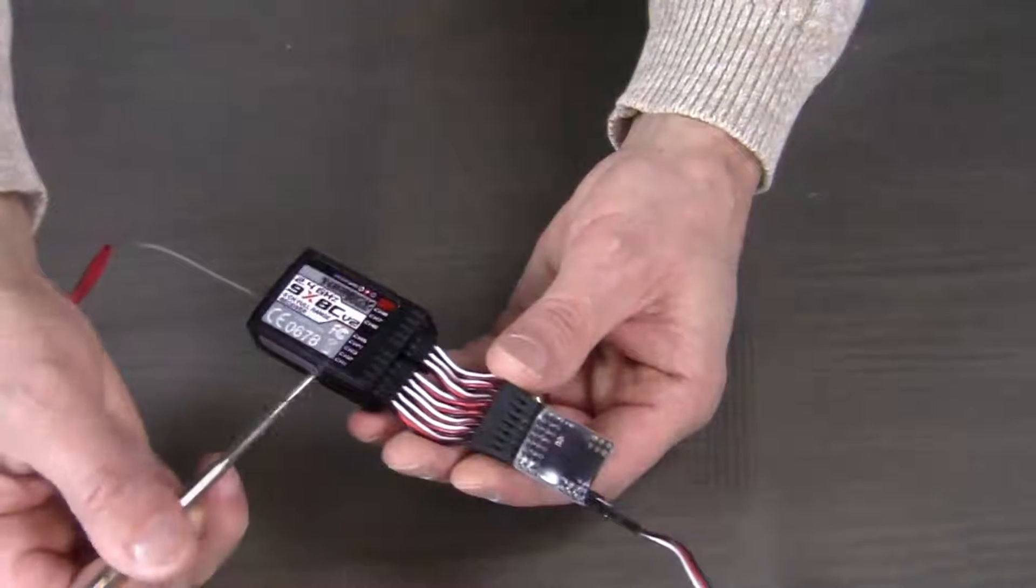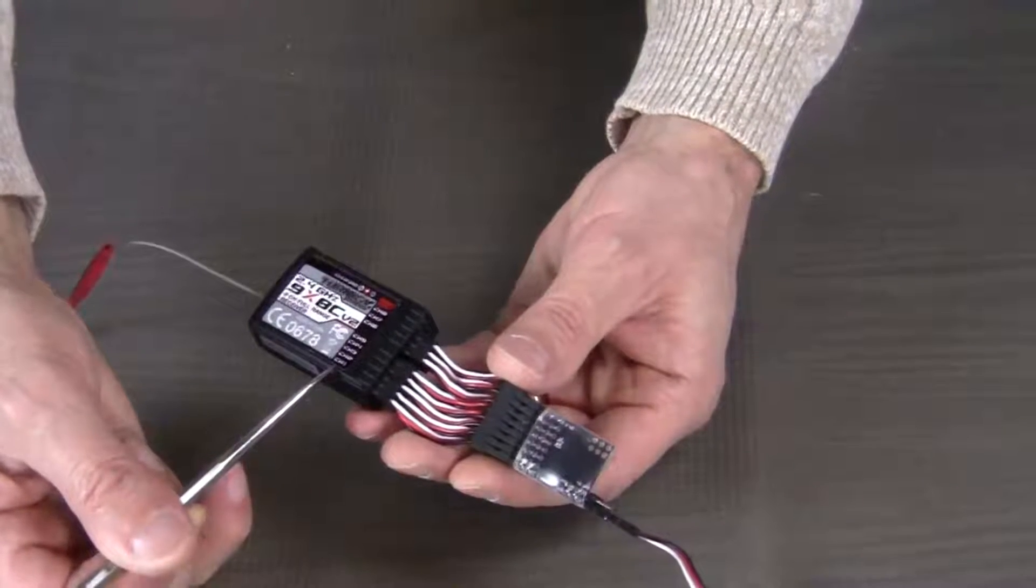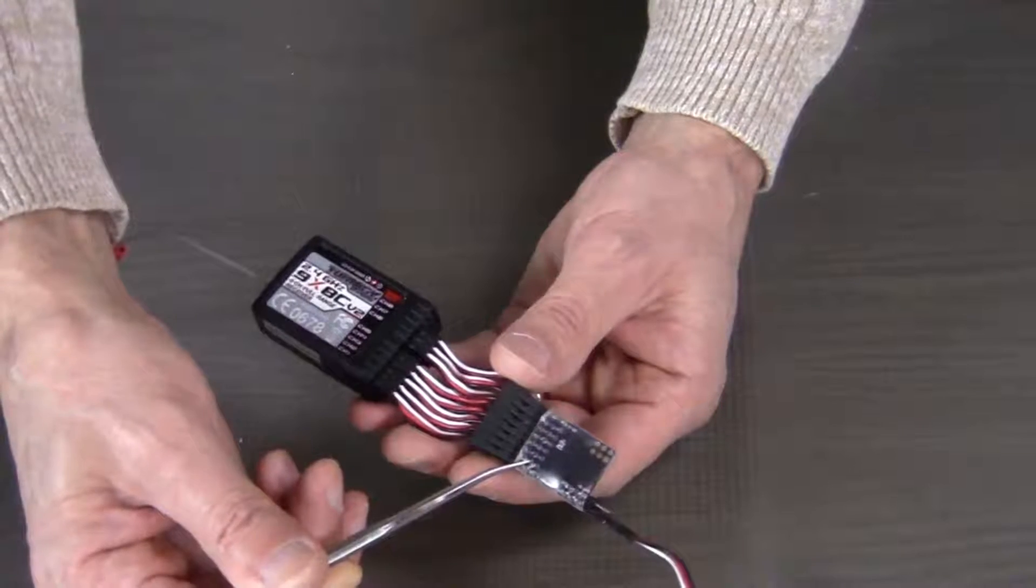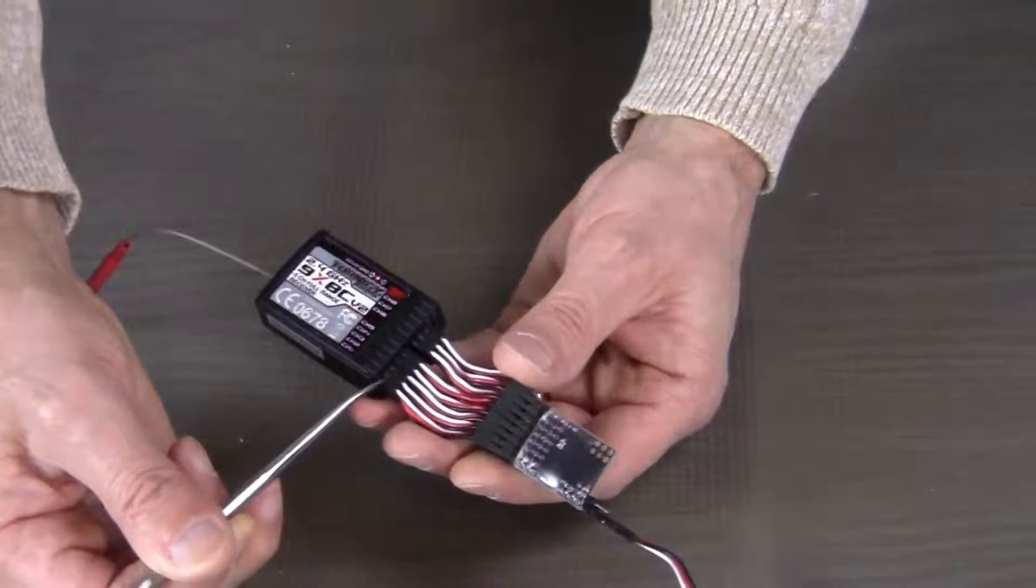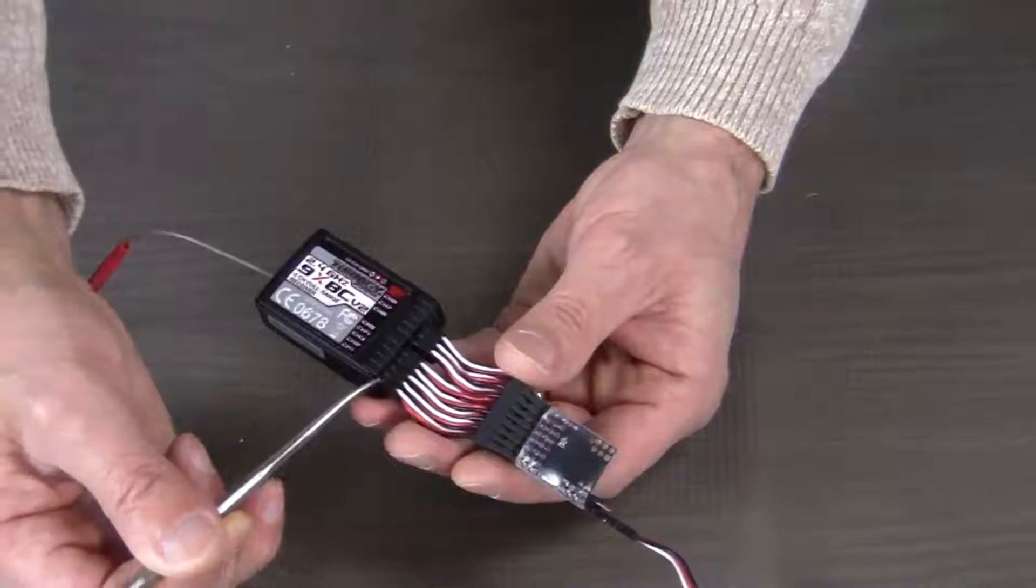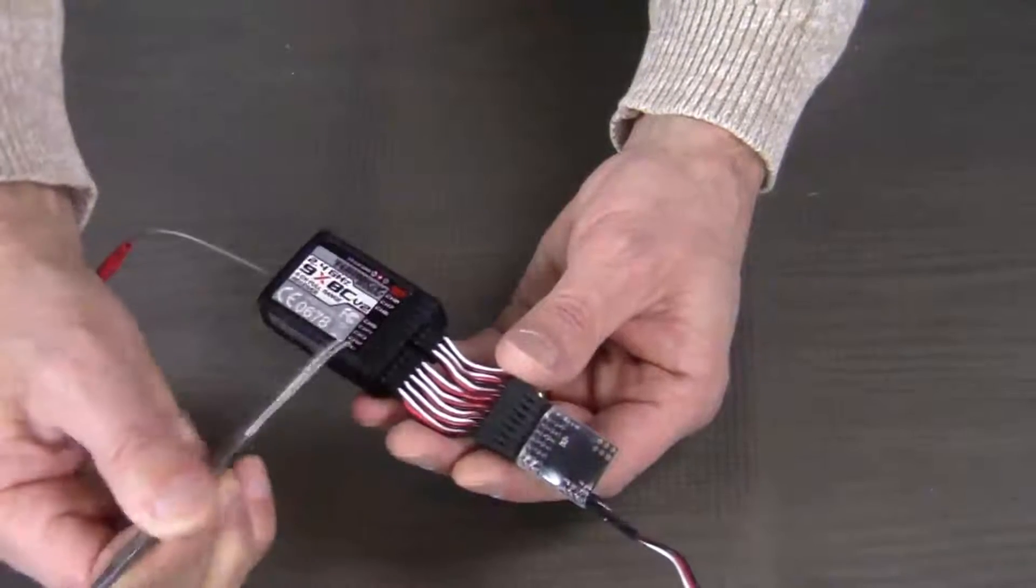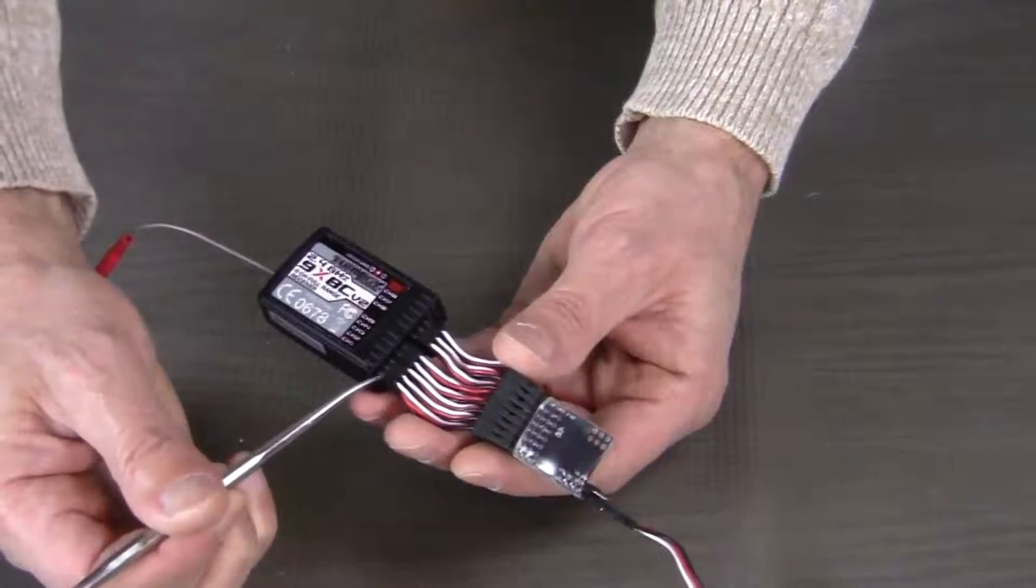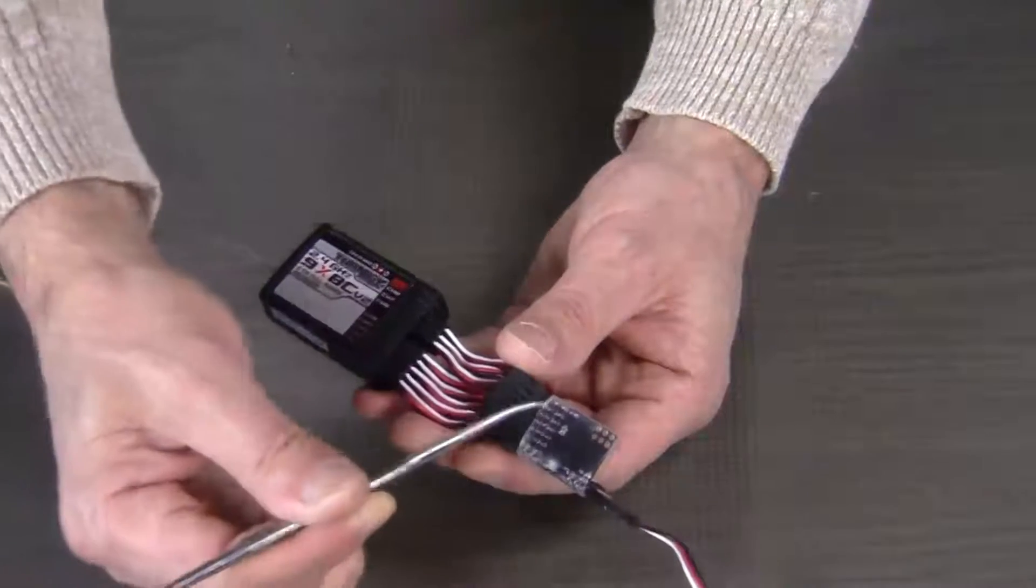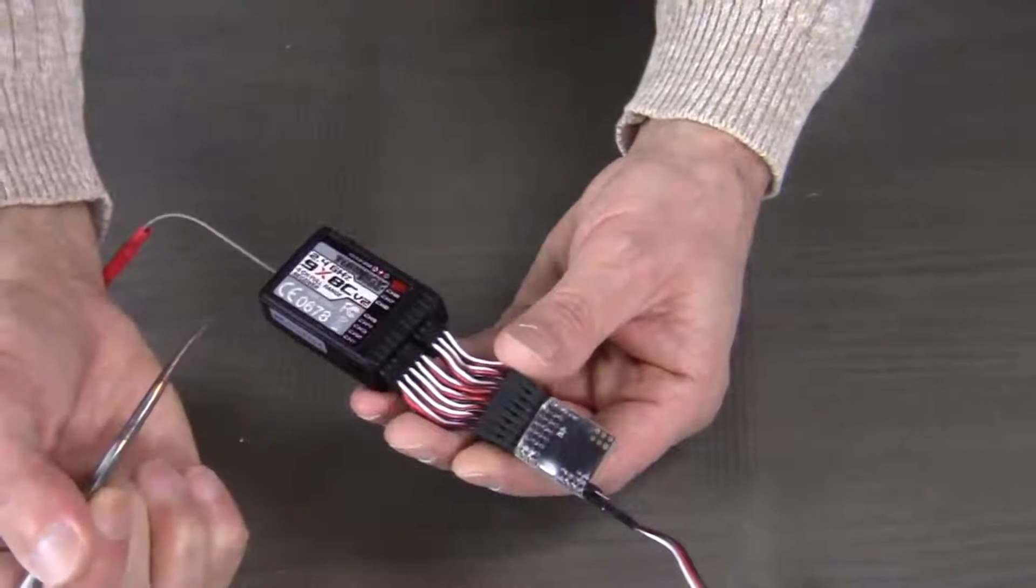When we connect channel one from the receiver to channel one on the encoder, we want to do that in a straight line. We don't want wires crisscrossing one another. I don't even know if you could do it, to be honest. But going from channel one to channel one over here, that would make a heck of a mess.